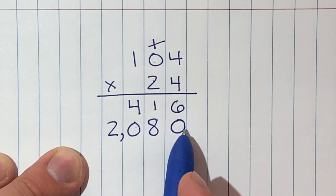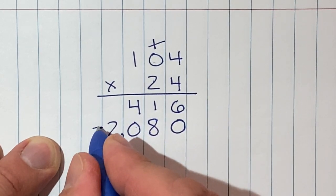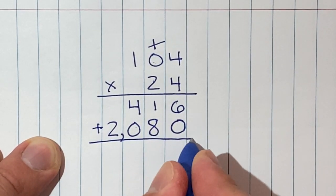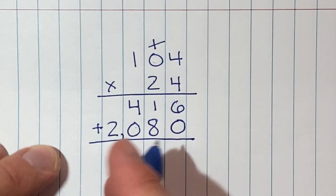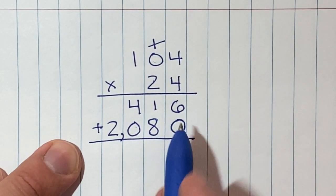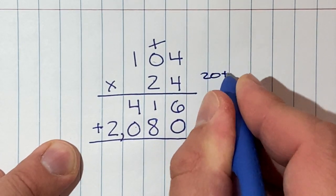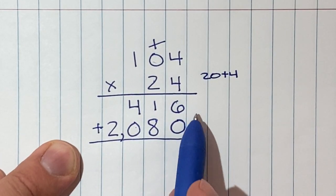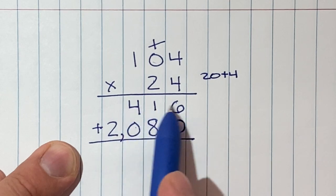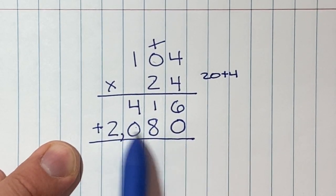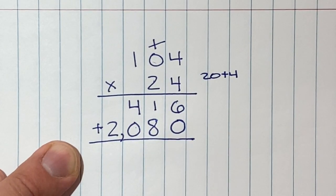Kind of like Humpty Dumpty who fell and broke apart, you got to put them back together again. What we just did with this problem is we broke 24 apart into 20 plus four. This is 104 times four, this is 104 times 20.